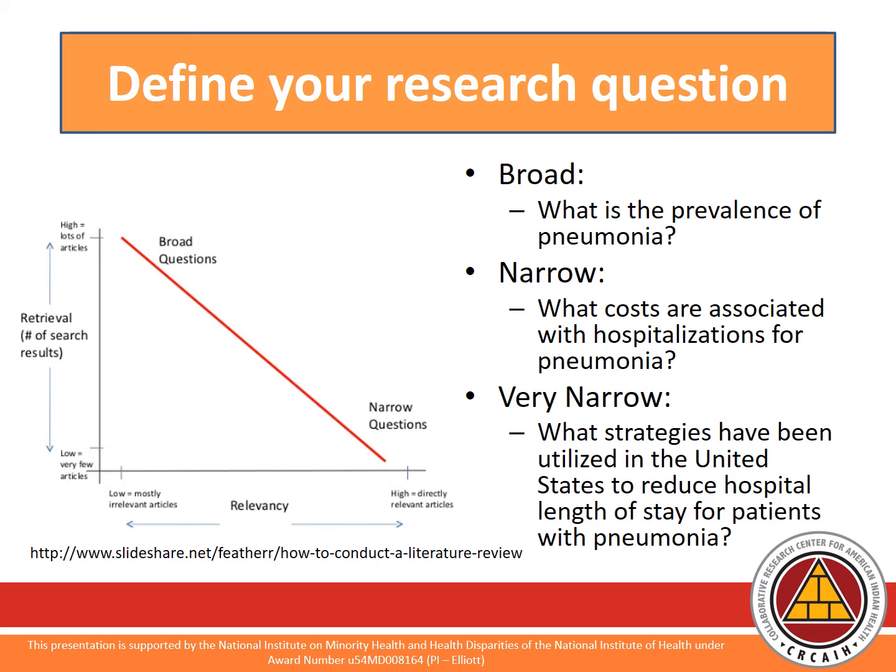However, if your question is very narrow — for example, what strategies have been utilized in the United States to reduce hospital length of stay for patients with pneumonia — then your search results will return relevant articles, but a very low amount of results. This is why you want to tailor your research question so that your search results give you a high amount of relevant articles. It should be narrow, but not so much that you may miss relevant work. For example: what costs are associated with hospitalizations for pneumonia?